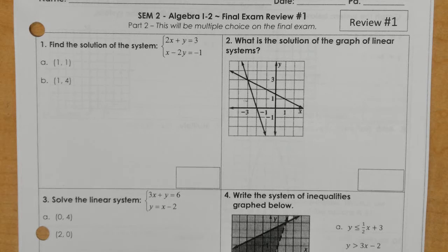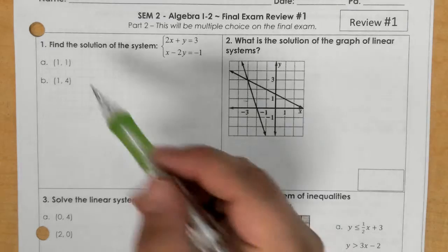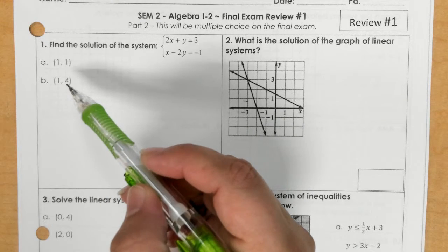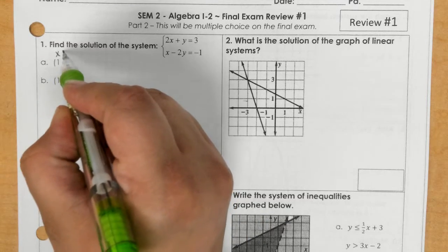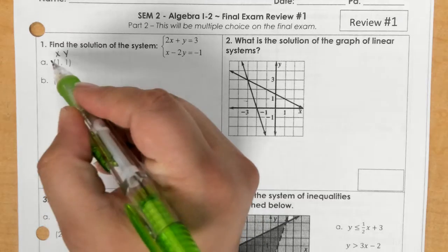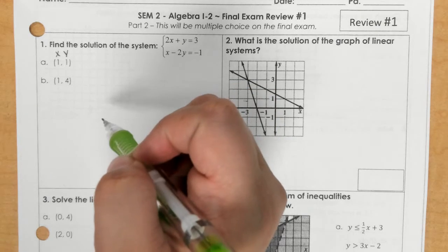For number one, it says find the solution of the system. And so you're given a couple choices here. So one thing you could do is you could label the points x and y and you could plug them in to the equation to see which one works.